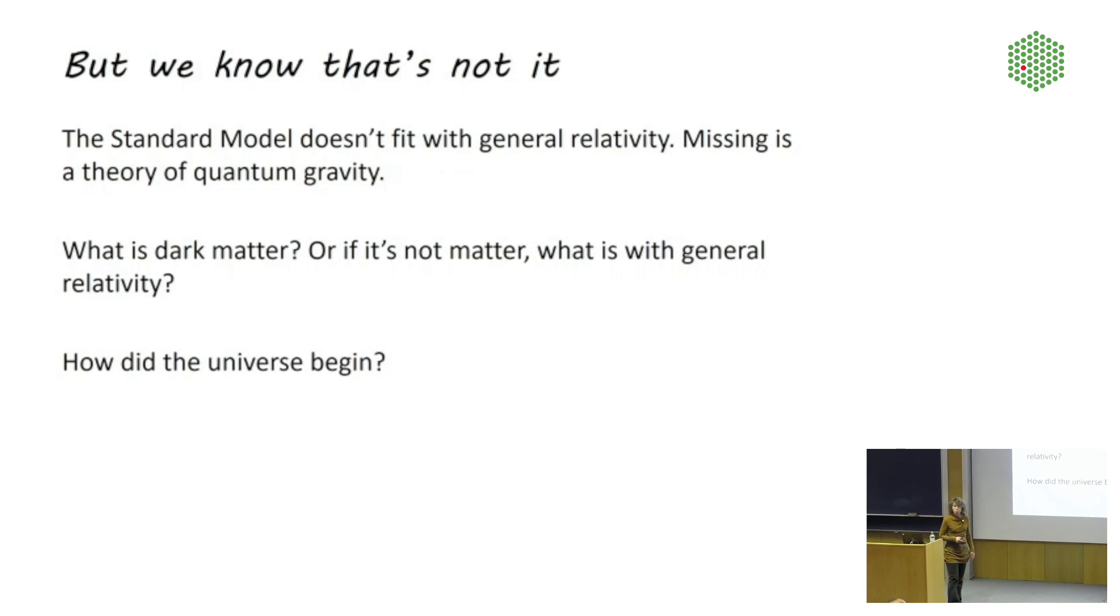The biggest one is that the standard model does not fit together with general relativity. You probably noticed that on the original slide I had these two theories separate from each other. That's because they don't like to communicate with each other. The problem is not all that hard to understand. We know that the constituents of matter have quantum properties. That means, among other things, that they obey Heisenberg's uncertainty principle and they can be in very specific ways in two places at once. That's what's called a quantum superposition.